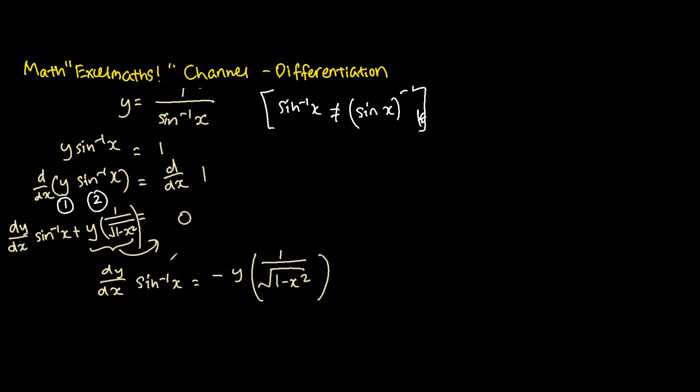So that our left hand side will only have dy over dx, so we have dy over dx, it's equals to negative y bracket, 1 over the square root of 1 minus x squared.